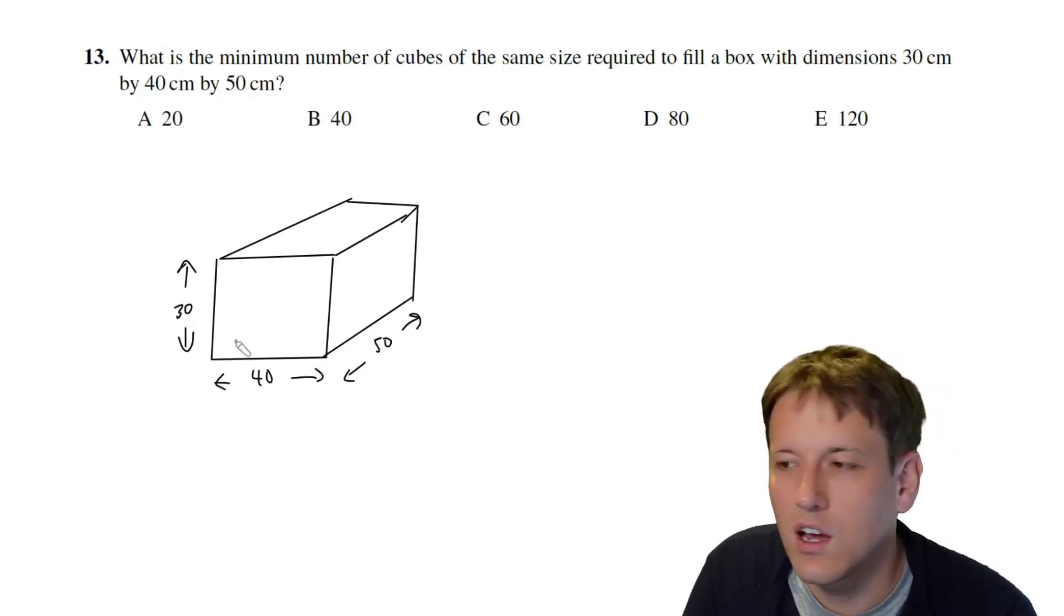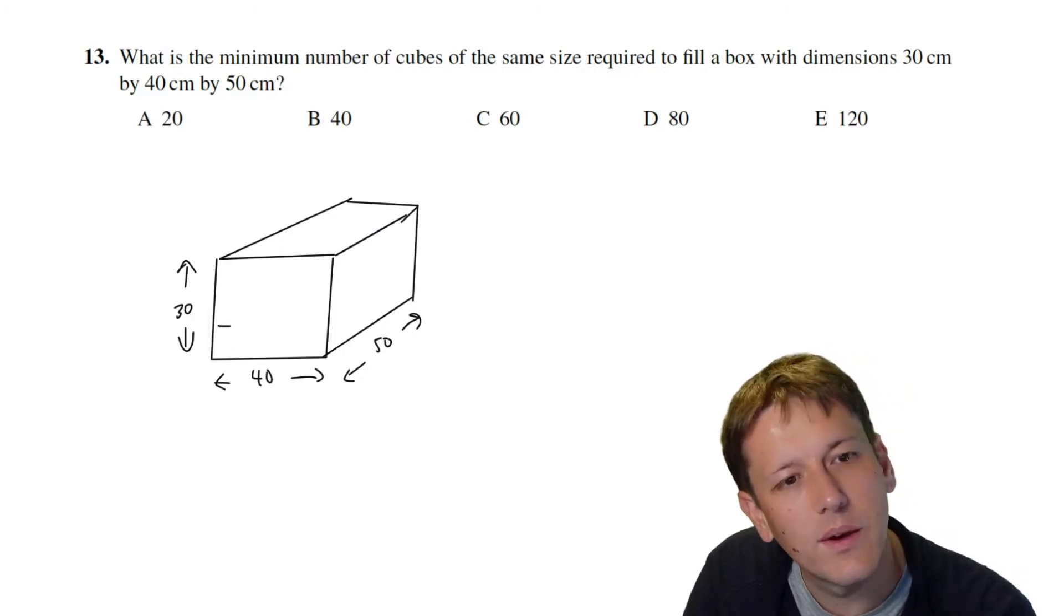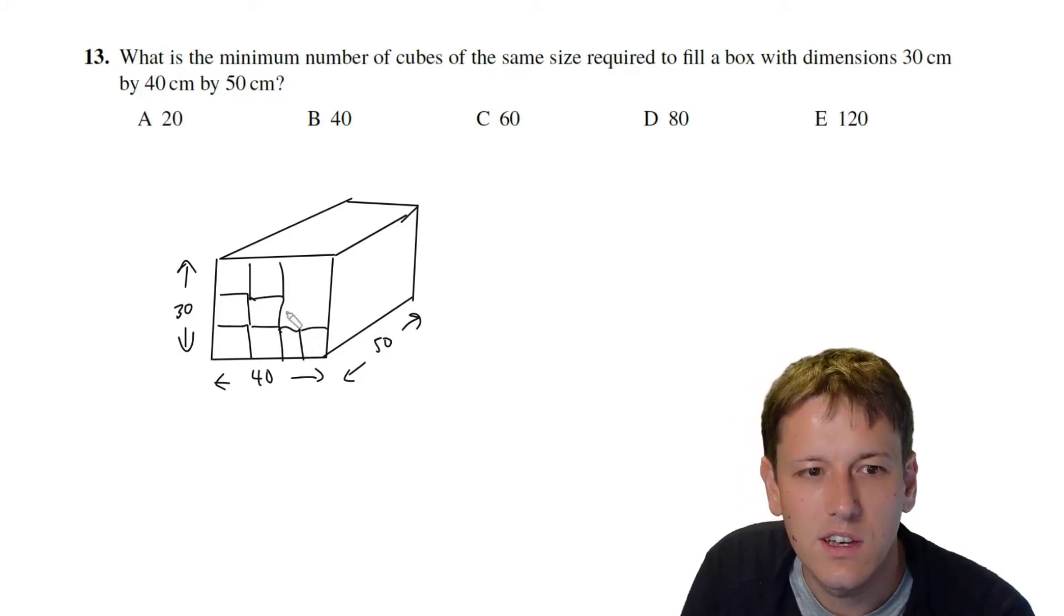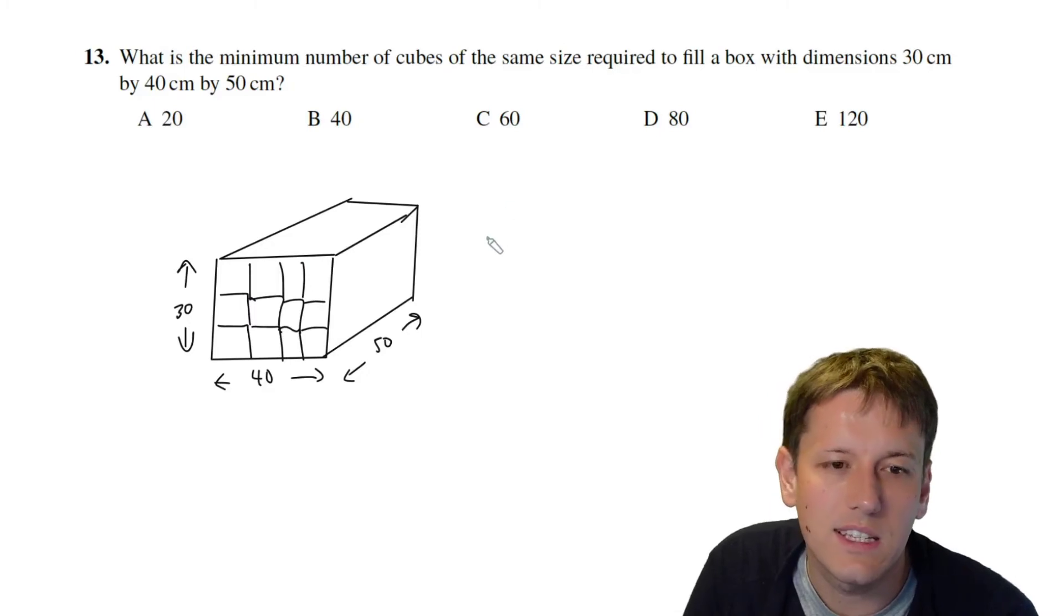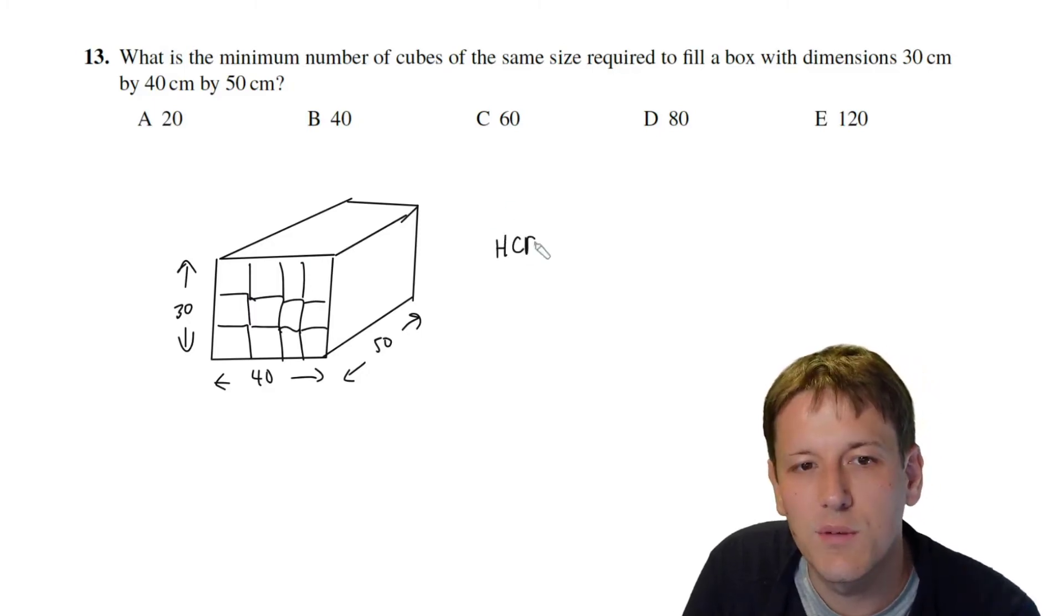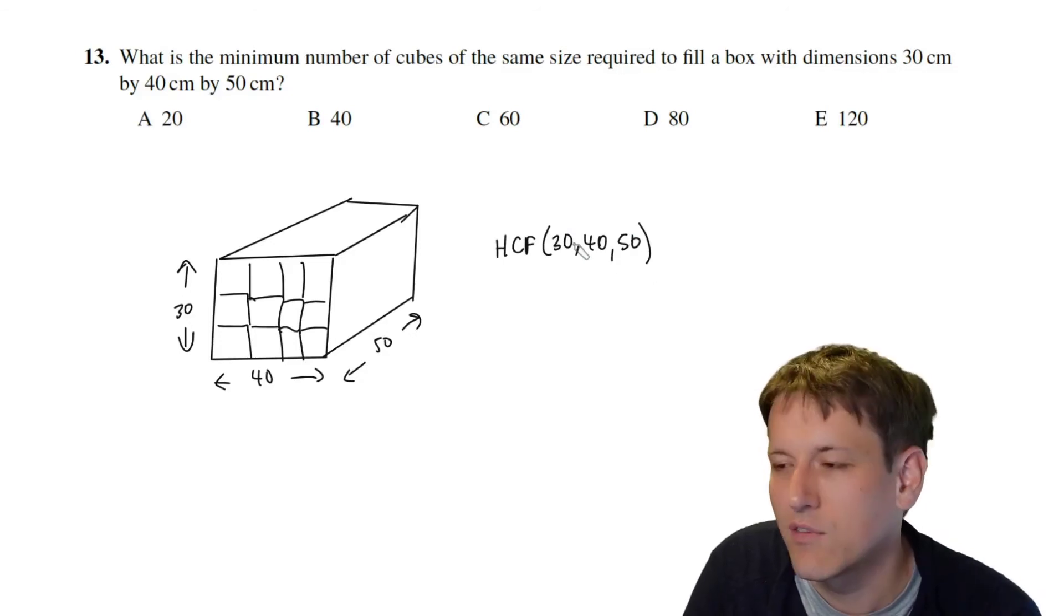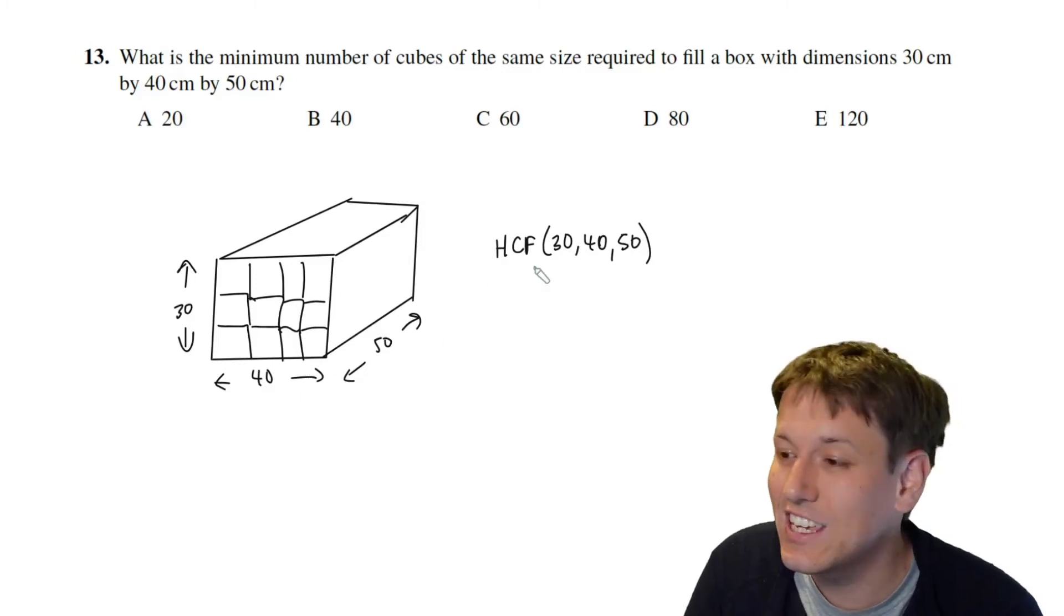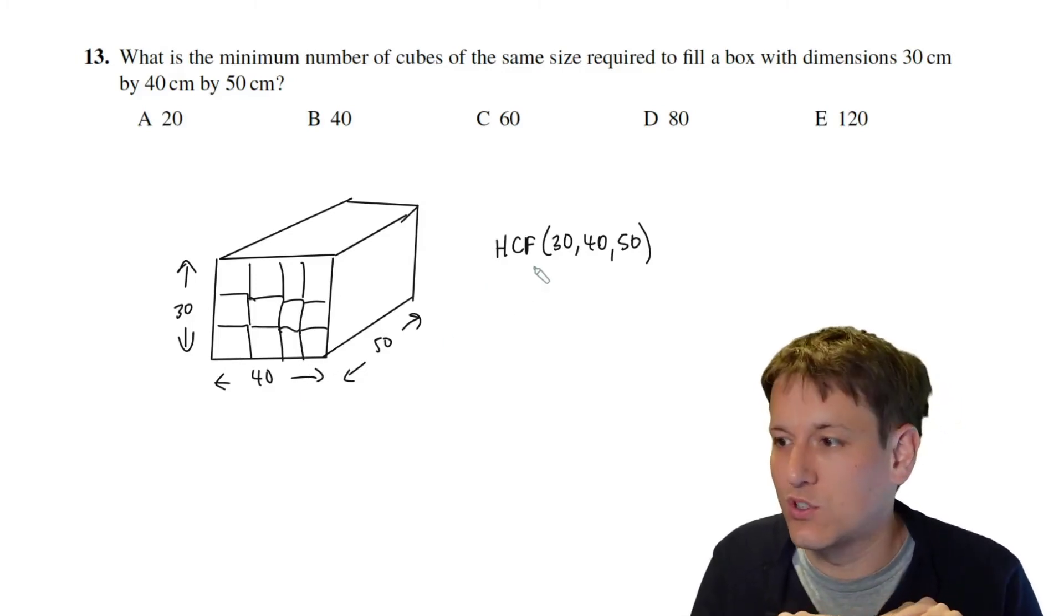So what this question is really asking is what size of cube is going to fit exactly into the box so that it divides into each of these different values, right. So it's really saying what is the highest common factor of 30, 40 and 50. That will be the largest cube side length that we can get in here.